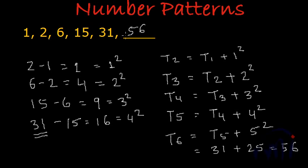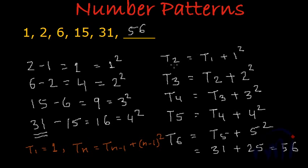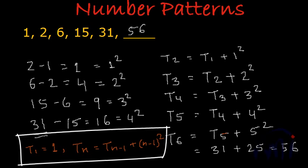What is the generalized format for the series? Let me take another color. t1 is equal to 1, and after that any nth term is equal to its previous term plus the square of its previous place. To find the second term we add square of 1 to the first term; to find the third term we add square of 2 to the second term. Similarly, to find the sixth term we add square of 5 to the fifth term. So the sixth term is 56, and the generalized format is: the first term is 1 and every nth term equals the square of (n minus 1) plus the (n minus 1)th term.